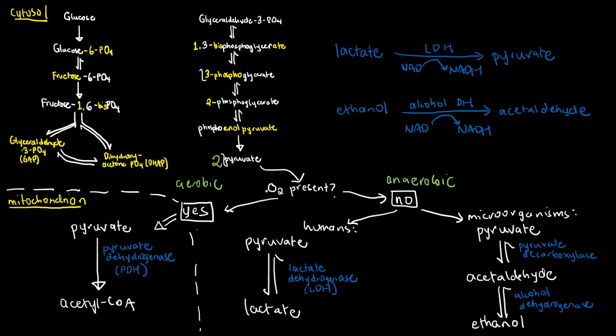If we have a lot of oxygen in the environment we will undergo aerobic respiration, wherein pyruvate which is originally in the cytosol travels to the inside of the mitochondrion. Inside the mitochondrion we have the enzyme called pyruvate dehydrogenase, often abbreviated as PDH, converting pyruvate to acetyl-CoA.